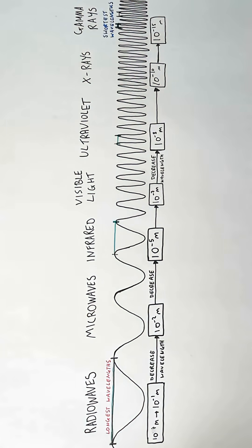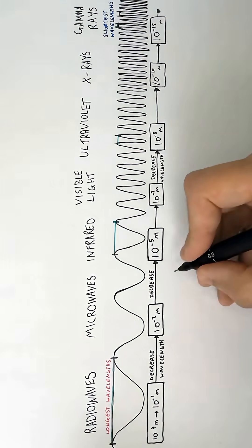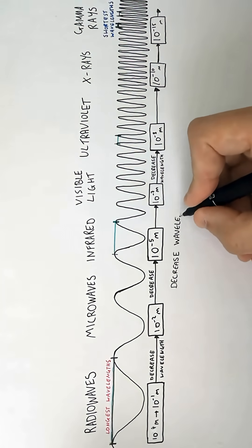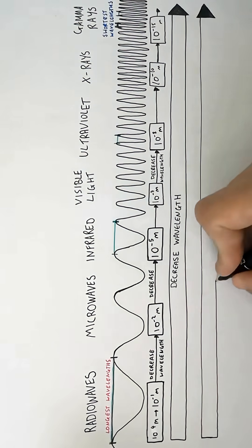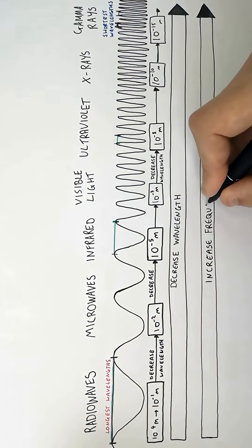So as you move down the electromagnetic spectrum from radio waves to gamma rays, you're going to decrease the wavelength. And as you decrease the wavelength, you're going to increase the frequency.